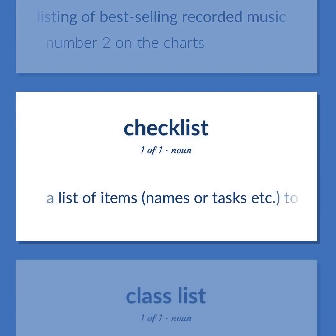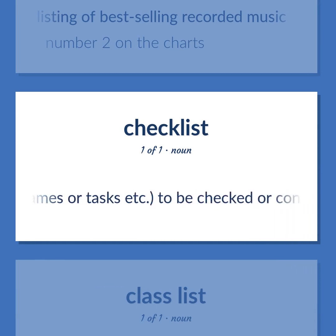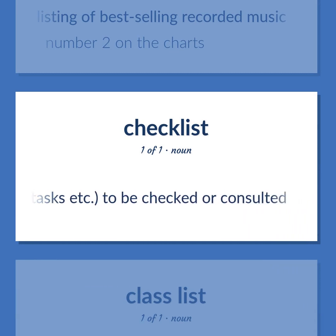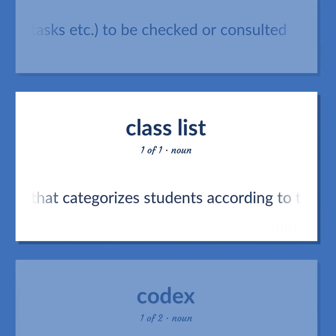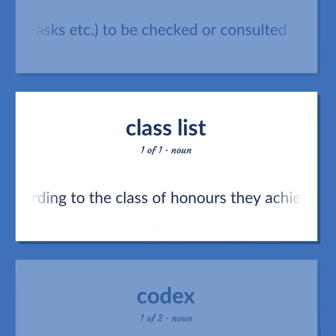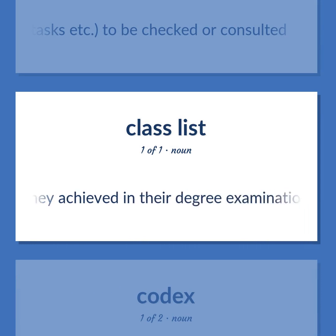Checklist: A list of items, names, or tasks to be checked or consulted. Class list: A list issued by examiners that categorizes students according to the class of honors they achieved in their degree examinations.